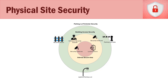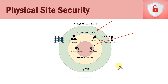In the diagram, in green we see our parking lot perimeter area, in yellow we see our building access area for getting into the building, and in the center in red we see our internal secure area.